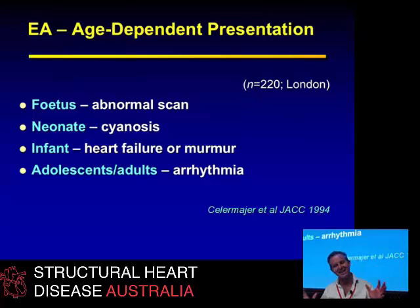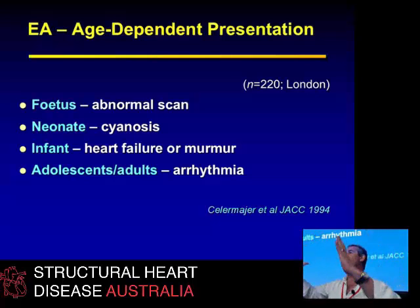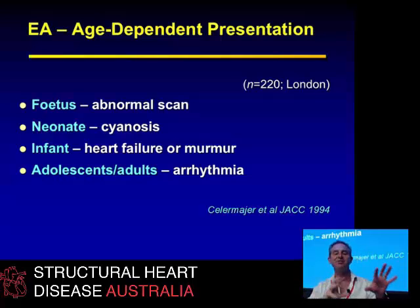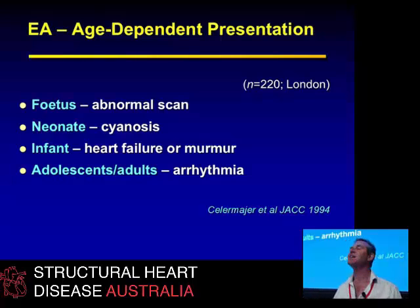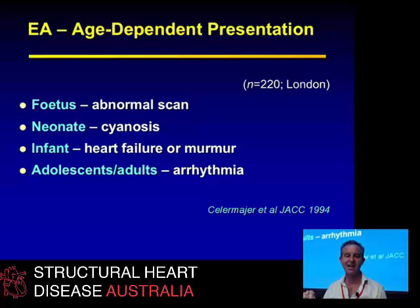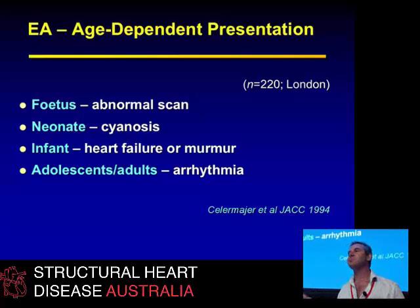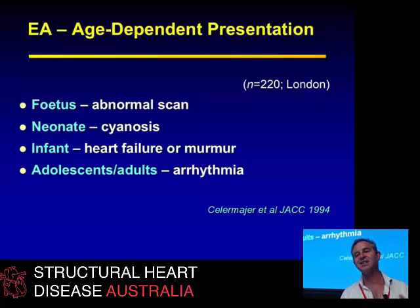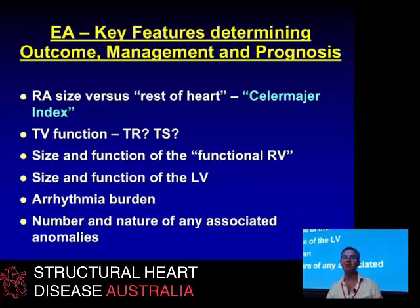The reason I think it's really cool is it's about the only disease I can think of that has an entirely different presentation according to what age it presents at. In the fetus, it either presents as hydrops, intrauterine death, or with an abnormal fetal scan. In the neonate, it causes cyanosis. In the infant, it presents because of a murmur or heart failure. In the adolescent or adult, it presents with arrhythmia. And in the old adult, it presents because someone finds the ASD and the right heart overload — and this is the Epstein.